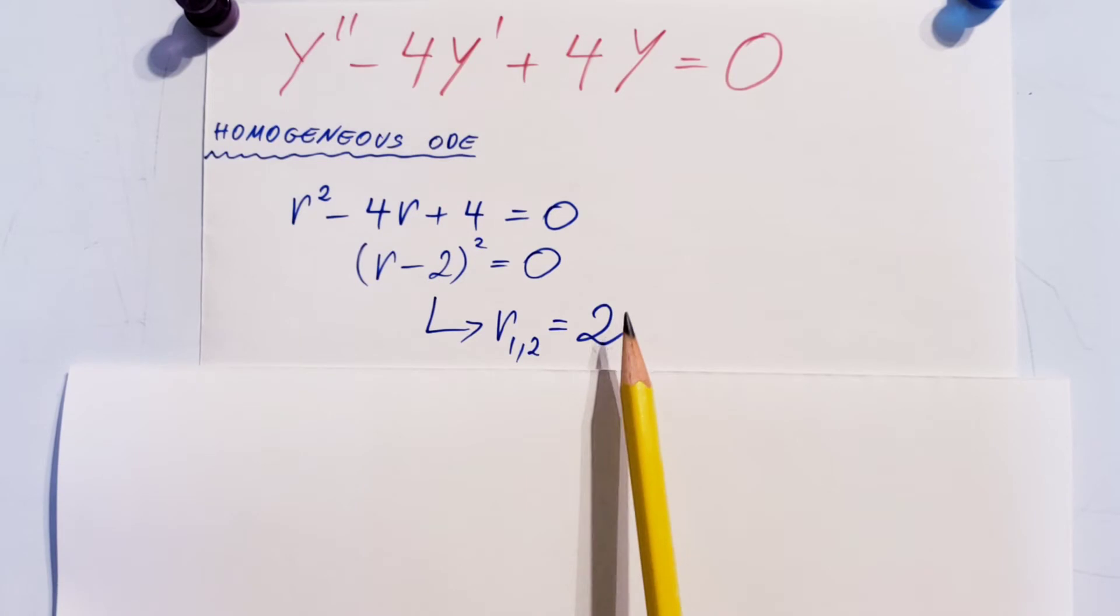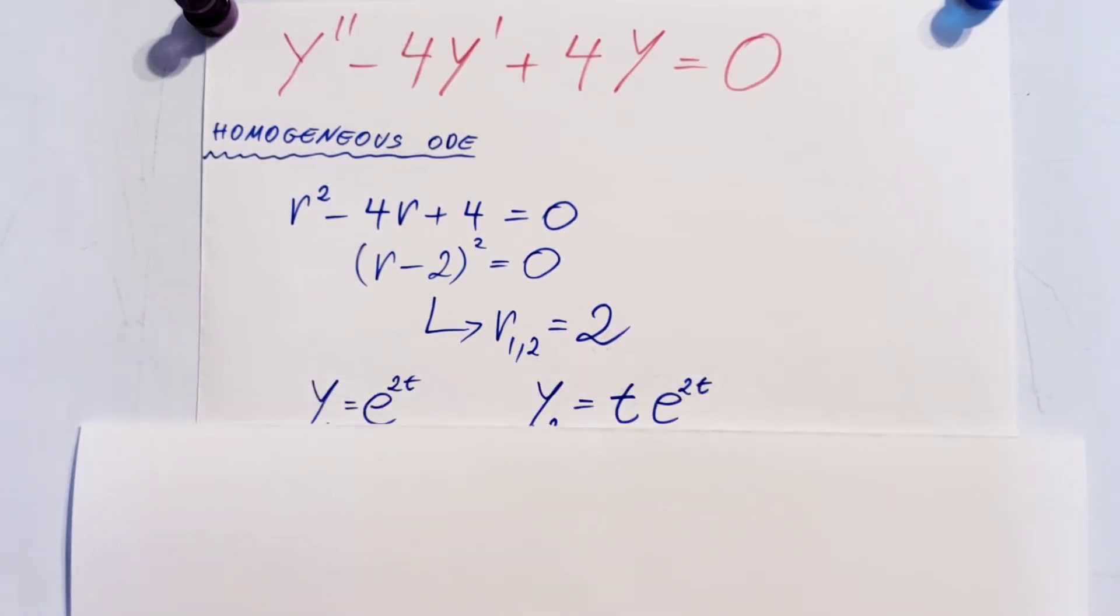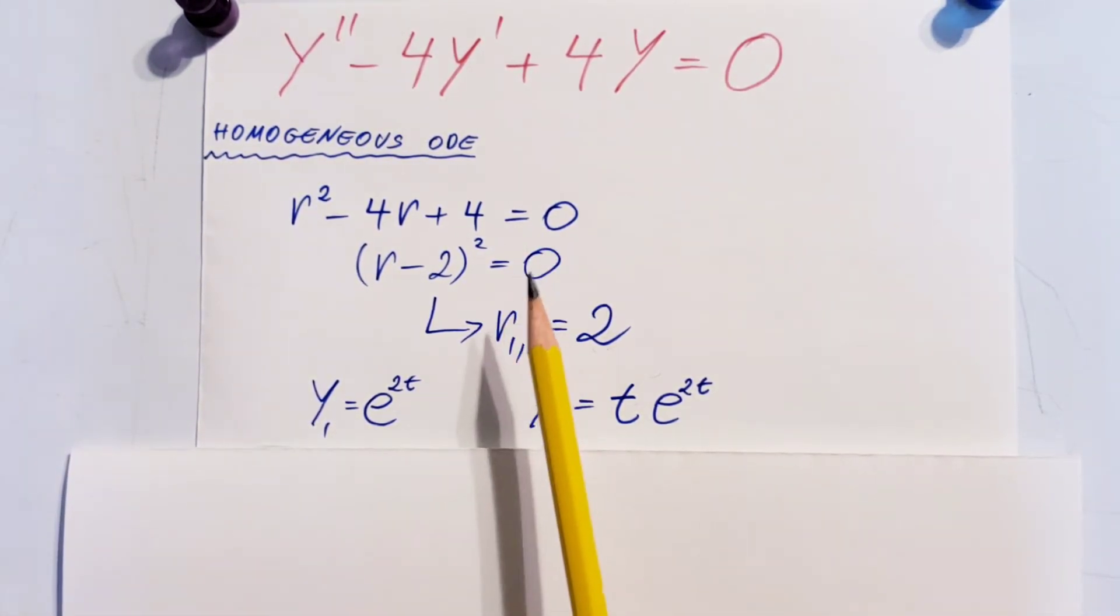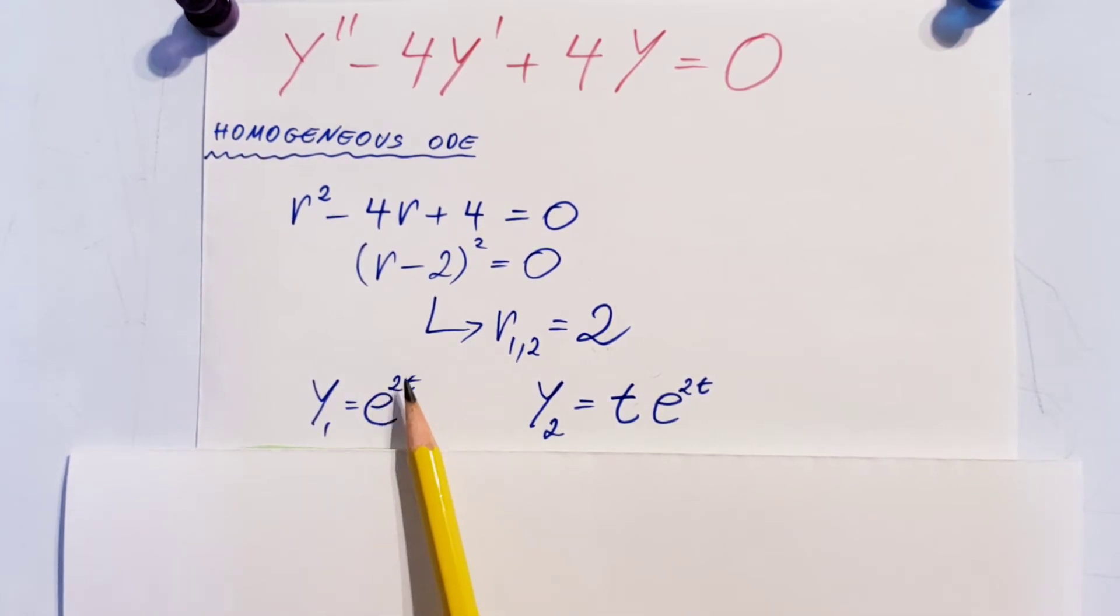From here we find our two solutions y₁ and y₂. This is where the trick is—don't get confused. From our first root r₁ = 2, we write the first solution y₁ = e^(2t). The 2 goes in the exponent.